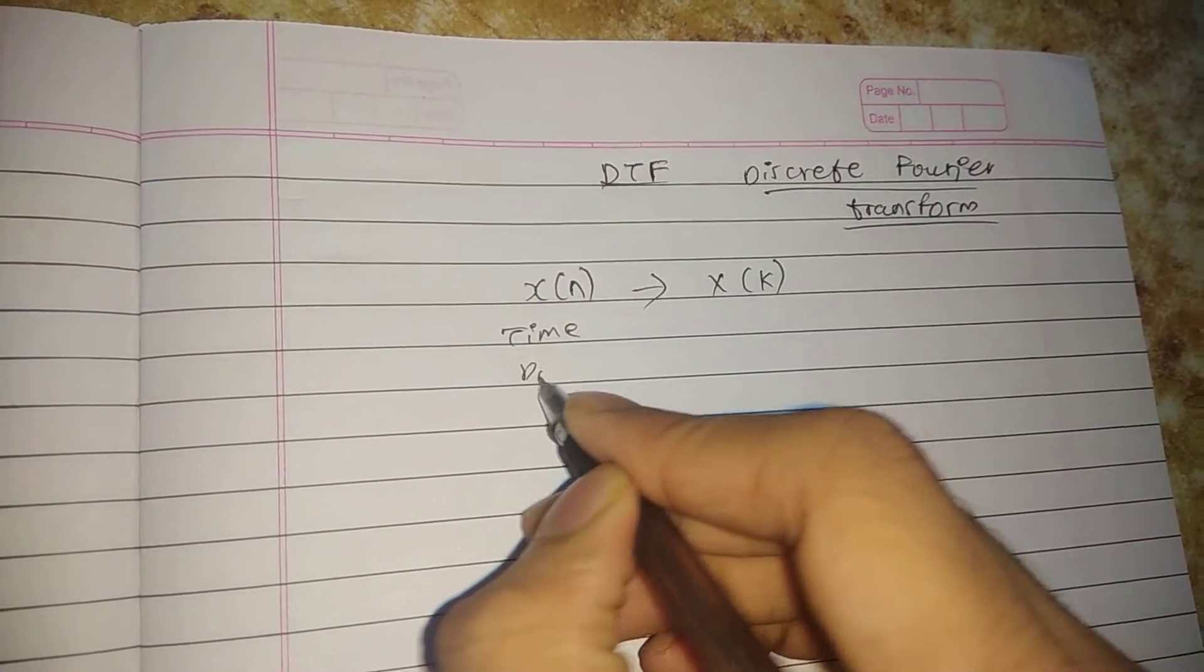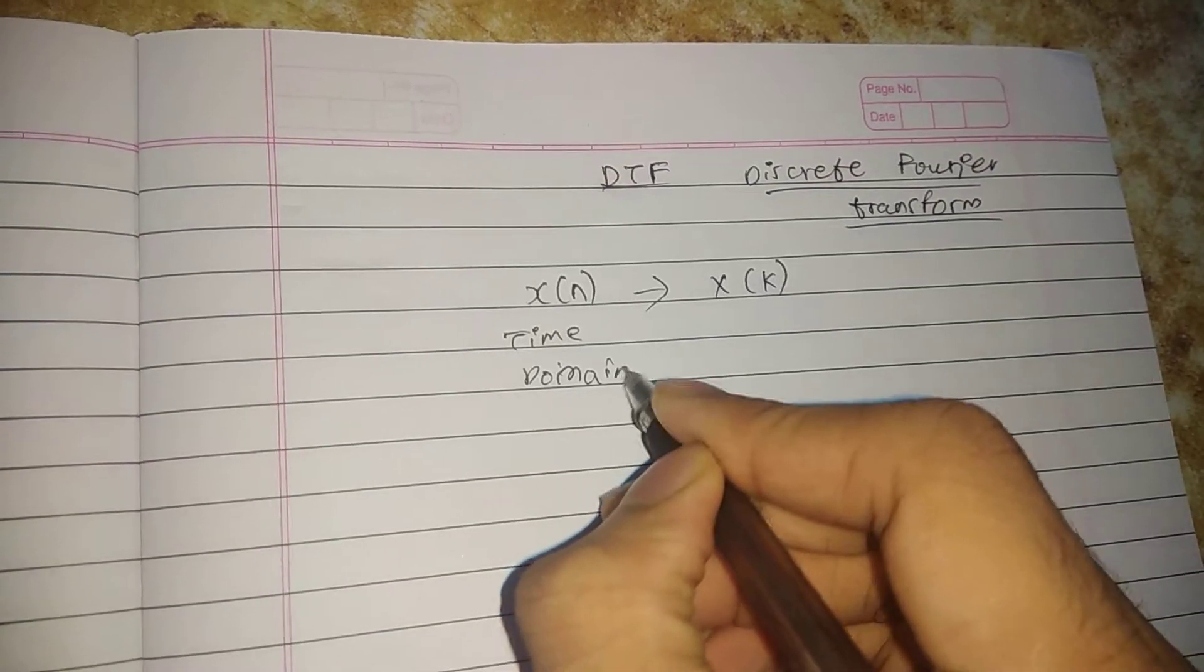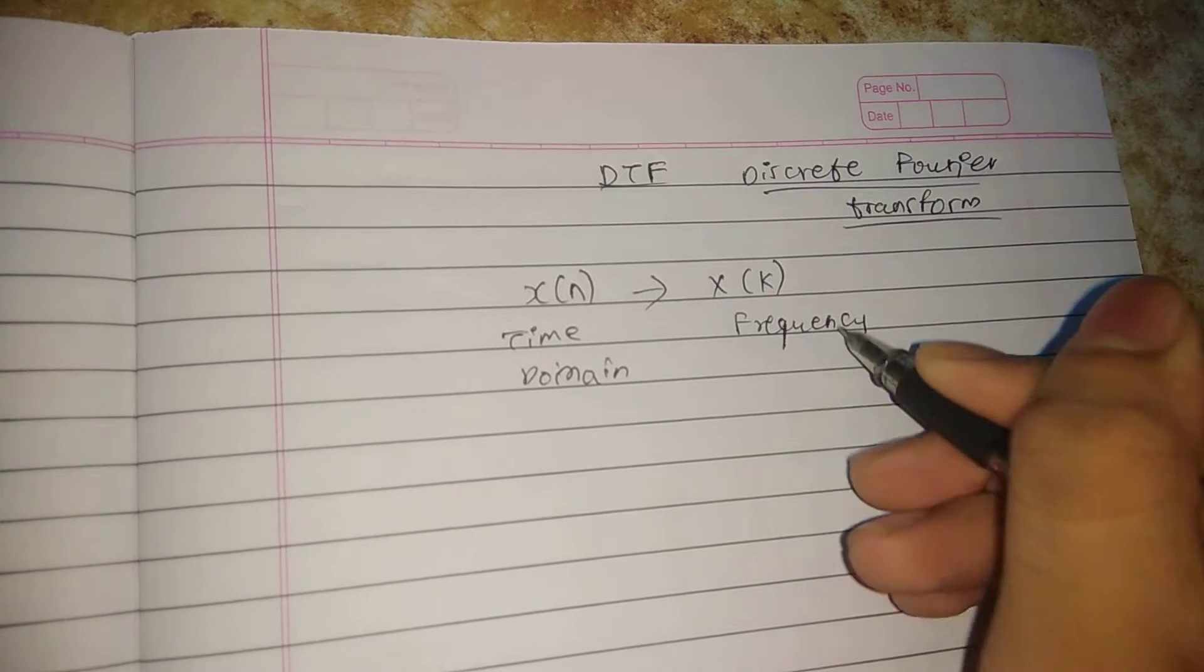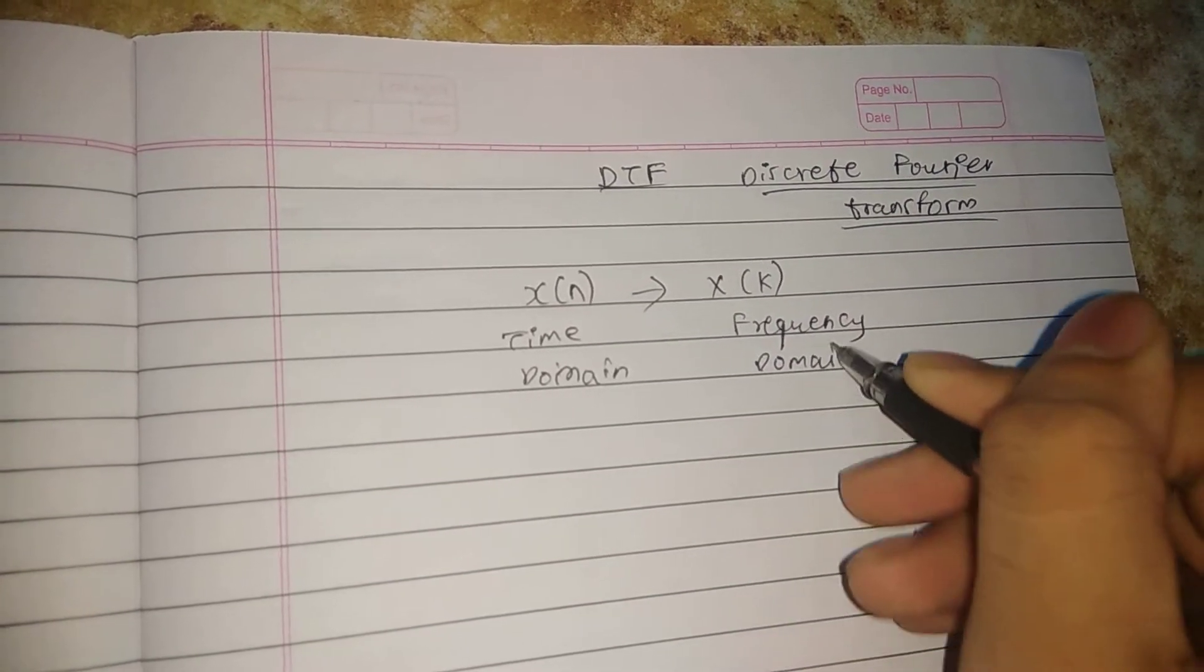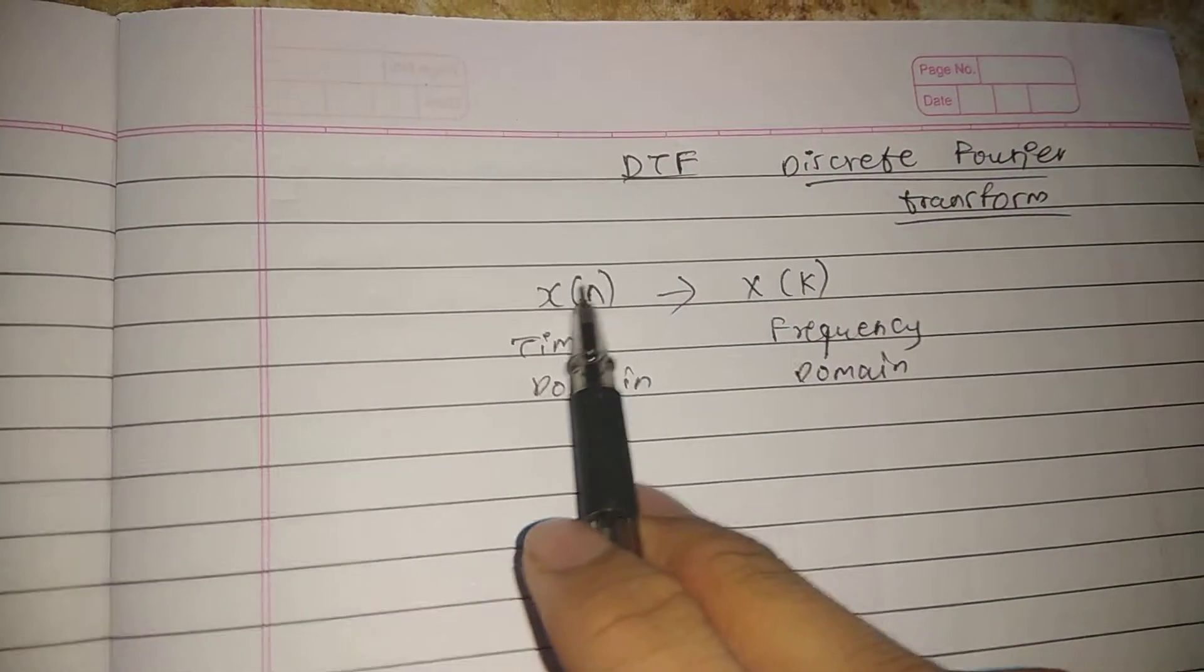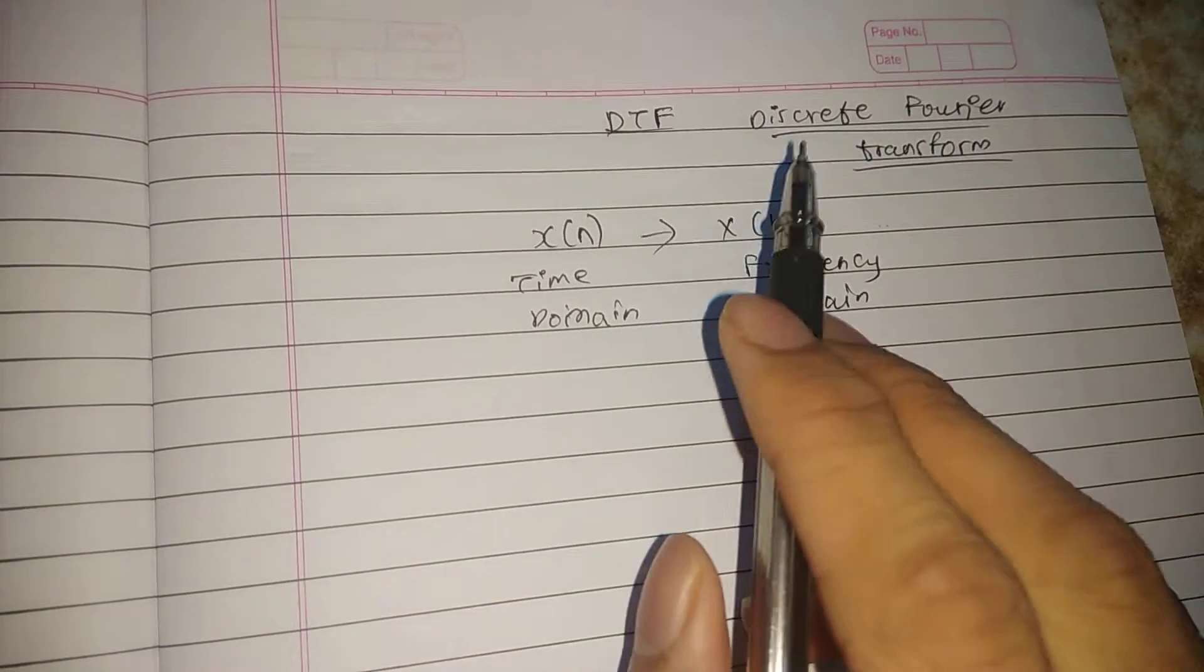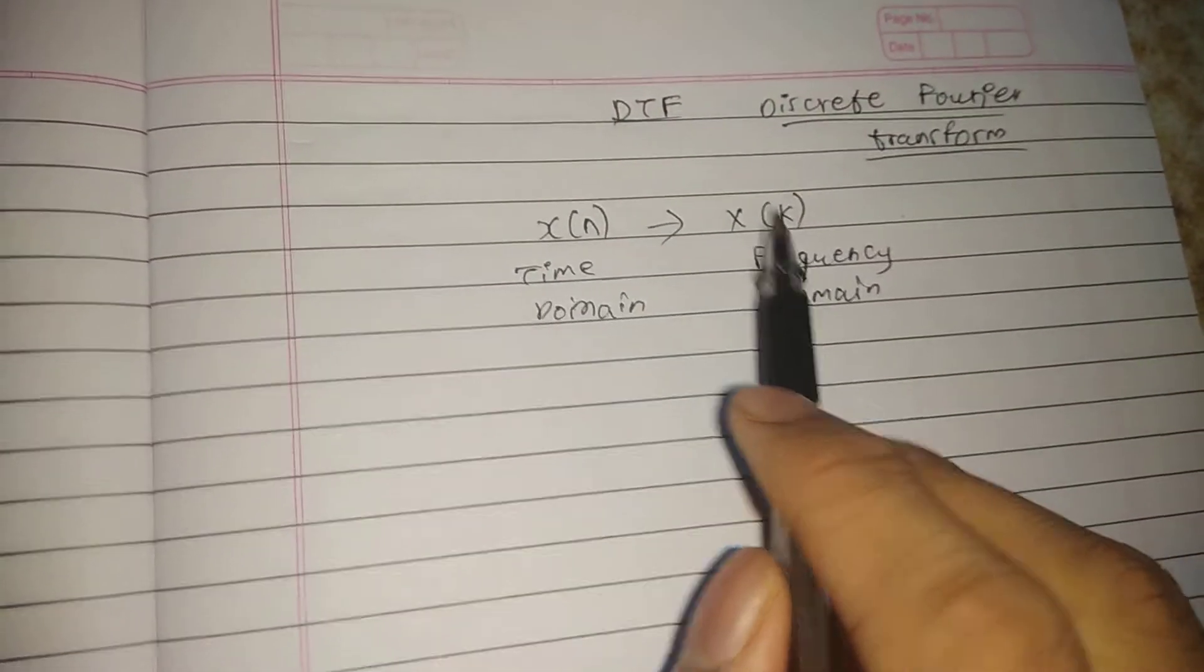is your time domain and x(k) is your frequency domain. So DFT is used to convert time domain into frequency domain. How to do this particular transformation?